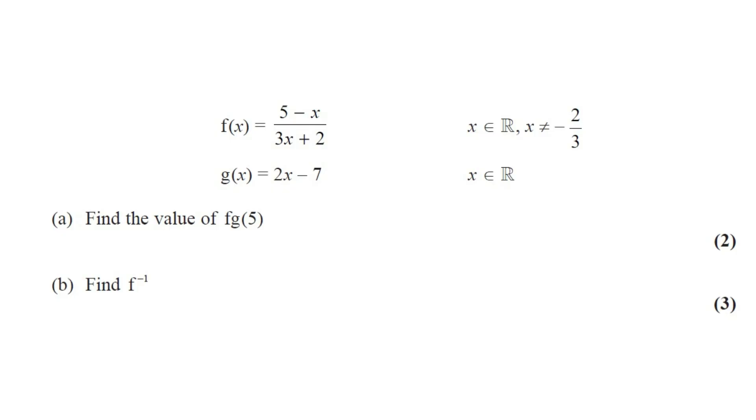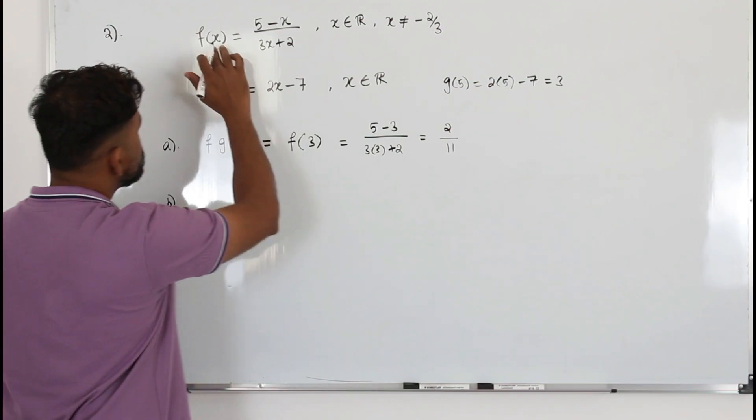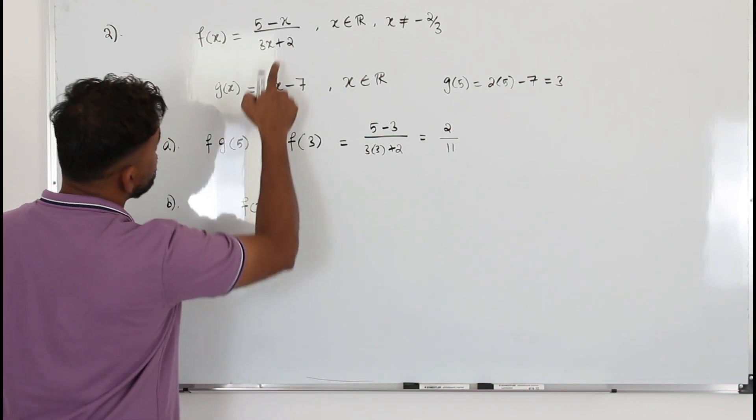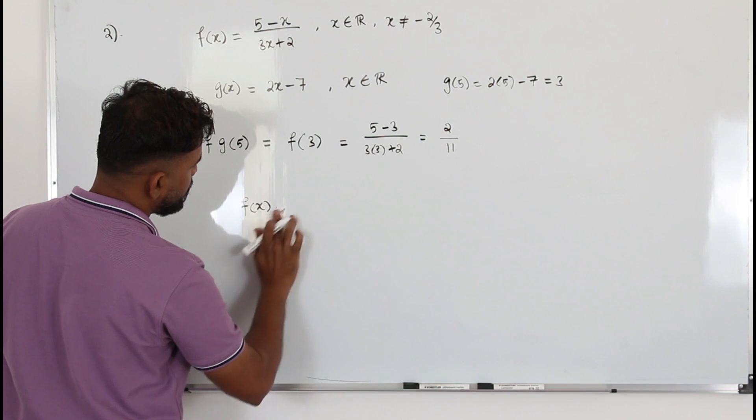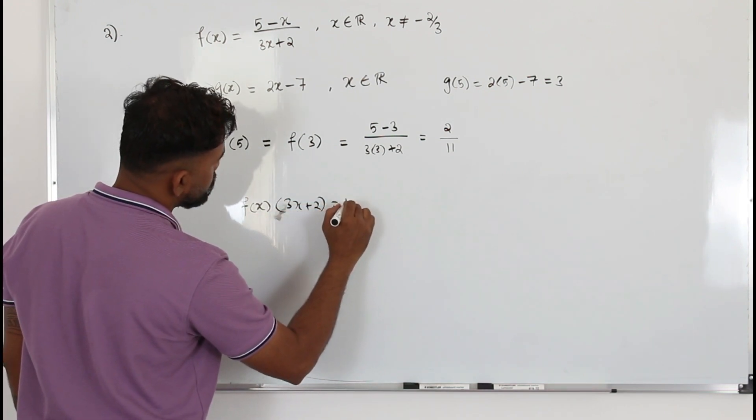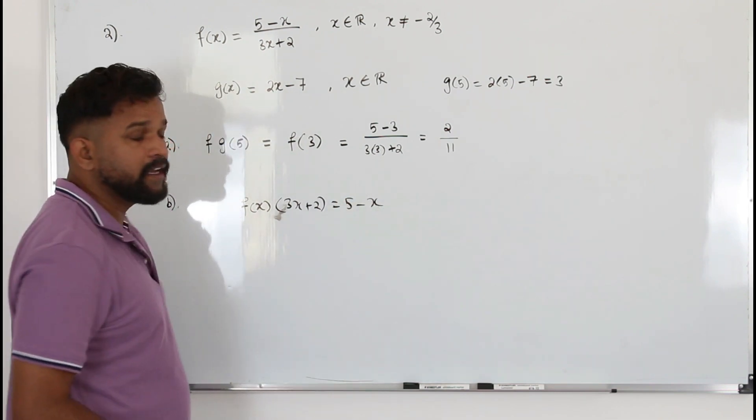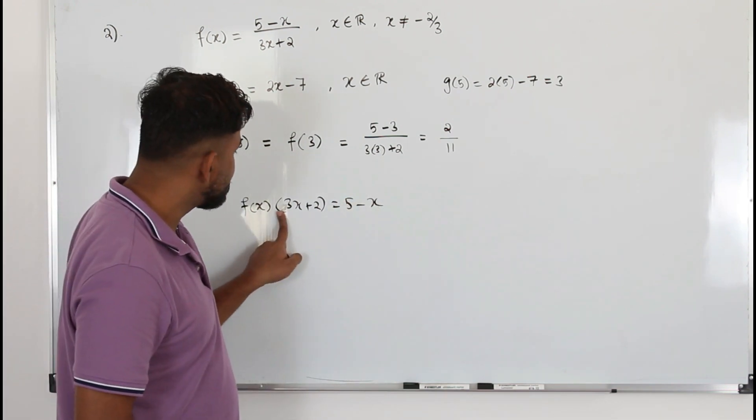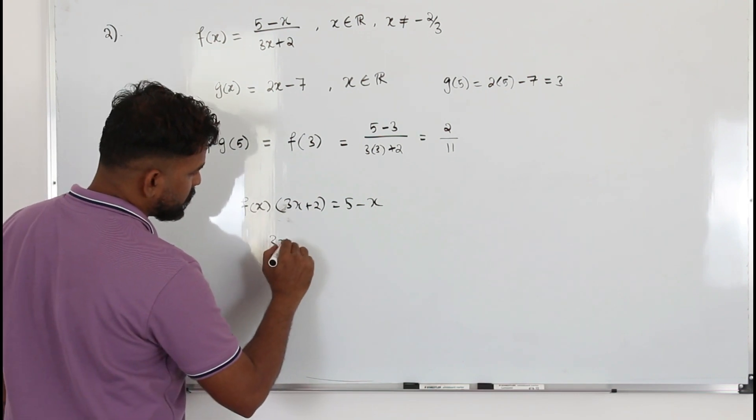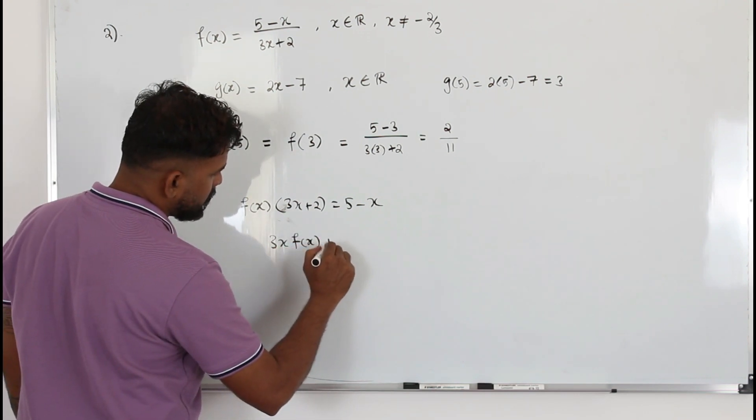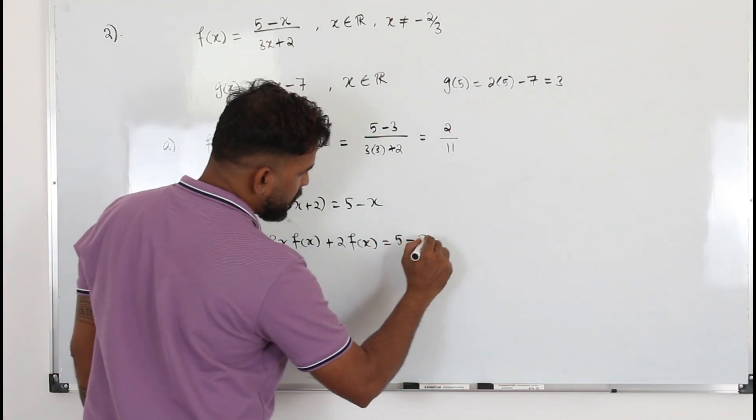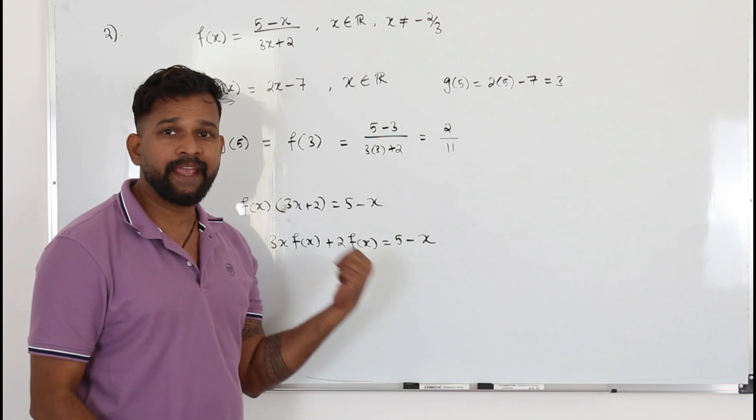Part b, find f inverse. This question got three marks. So take this function f(x), bring the denominator here. f(x) times (3x + 2) equals 5 minus x. To find the inverse function, we need to make x as a subject. So I'm going to multiply throughout by f(x). 3x f(x) + 2 f(x) equals 5 - x. We are trying to make x as a subject.